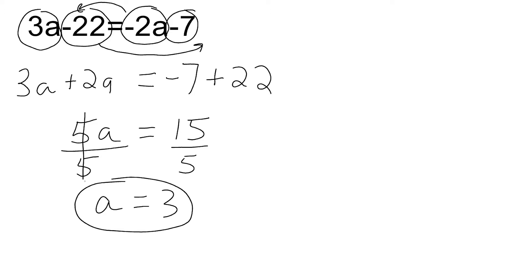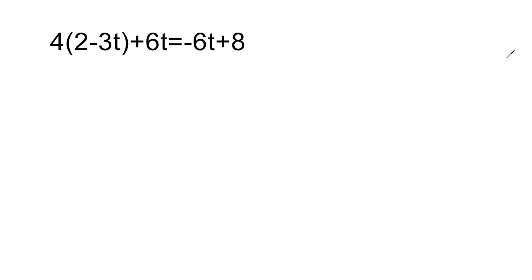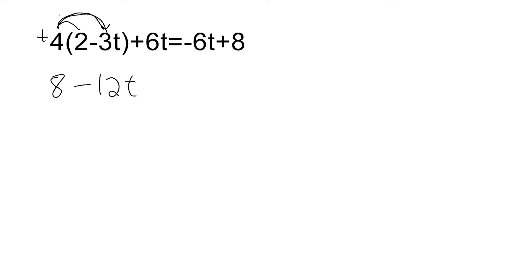Let's go ahead and do another example. For this problem, we are going to simplify everything on the left and everything on the right. Although everything on the right is already as simple as you can get it — there's nothing to combine there. But we can distribute this 4 to each term inside the parentheses. So we're going to take 4 times 2, which is 8, and then 4 times negative 3t, which is negative 12t. We always have to watch our signs — this 4 is positive multiplied by a negative term, so a positive times a negative is always a negative.